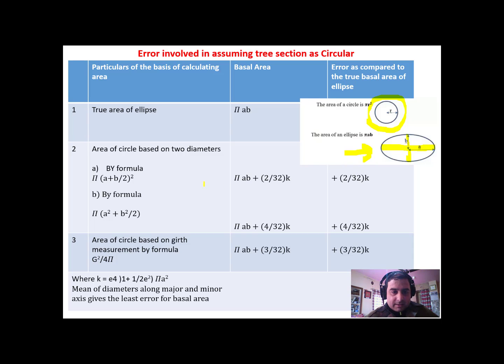Then there are two methods, two formulas which you can use to arrive at the basal area. The first is using this formula. In this formula, what we do, we get diameter one and we get diameter two, then we average both these diameters, and then apply the formula pi r square to get the basal area of the tree section.